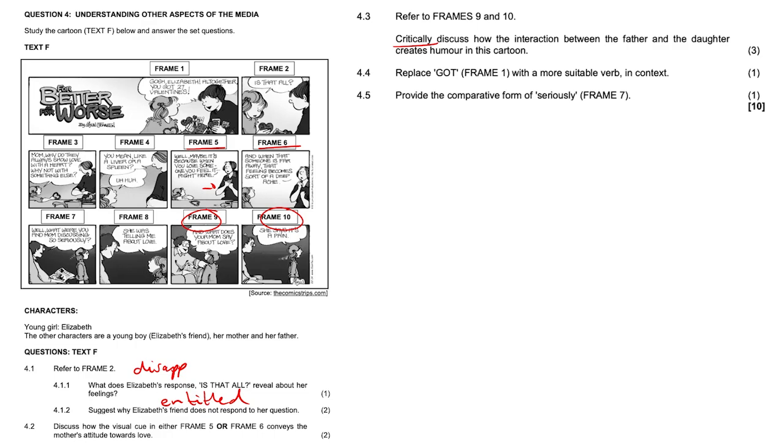4.4, replace the word 'got' in frame 1 with a more suitable verb. Very easy, like you received, you were given, obtained, yeah anything like that. And provide the comparative form of the word 'seriously'. That doesn't make sense, it's just going to be more seriously. Okay, that's it, that's the question.